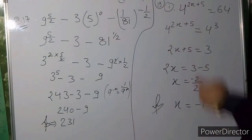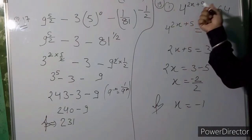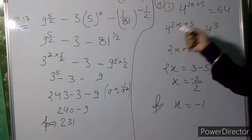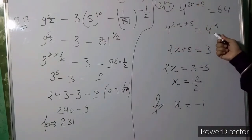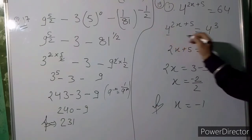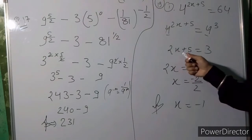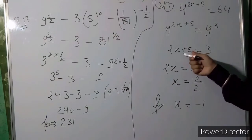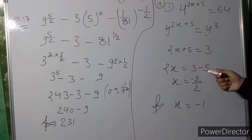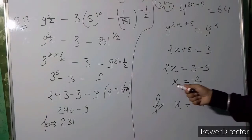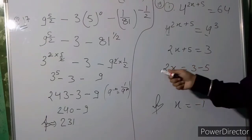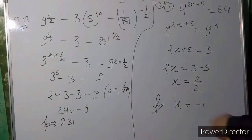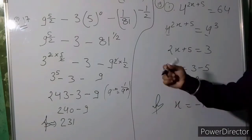Next: find the value of x where 4^(2x+5) = 64. We can write 64 as 4³. Since the bases are the same (both 4), we equate the exponents: 2x + 5 = 3. Transposing, 2x = 3 − 5 = −2, so x = −2/2 = −1. Your value of x is minus 1.